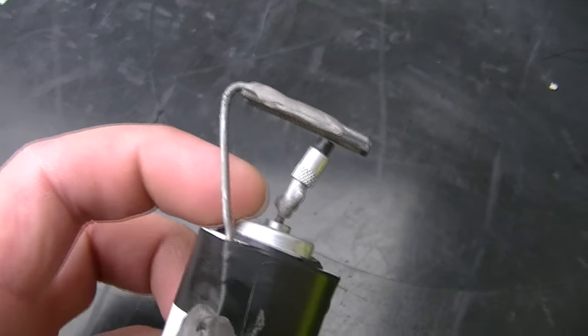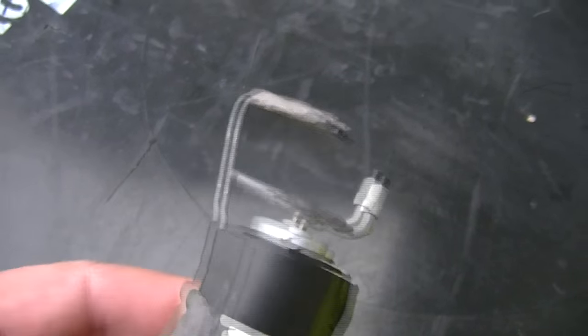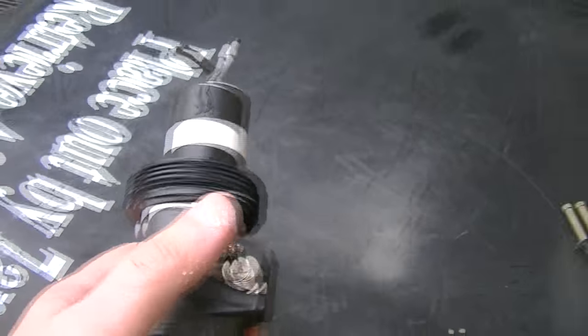Then I took some steel coat hanger and JB Welded the flint striker onto it, so when this bugger spins around, it strikes it. Hooking it up to the nine-volt with a little switch here.